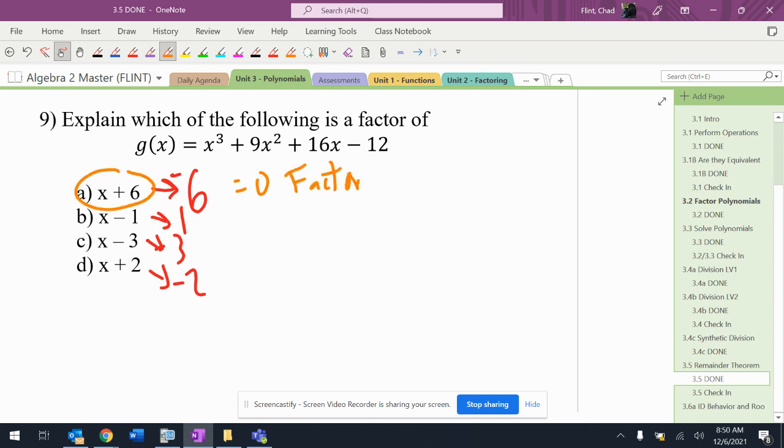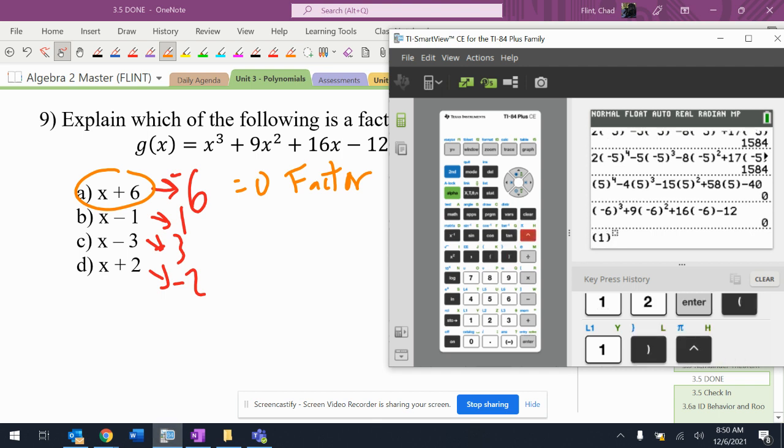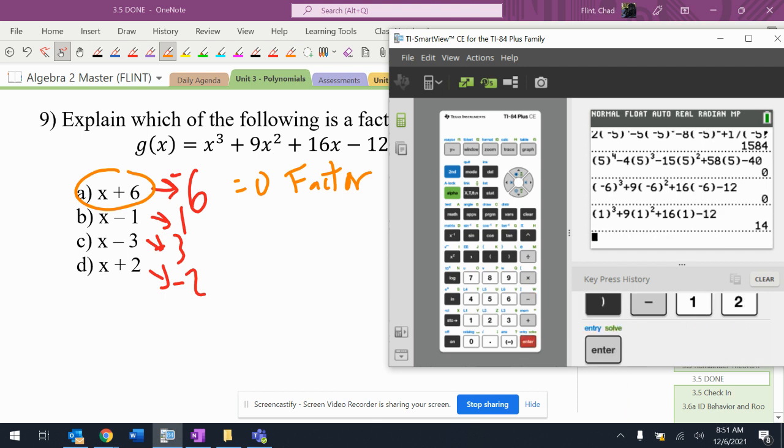So that means the other three must not give me zero. I'm going to double check this here and make sure I didn't just type something in wrong. 1 to the third plus 9 times 1 squared plus 16 times 1 minus 12. There's no way that was going to be 0. That was 14.